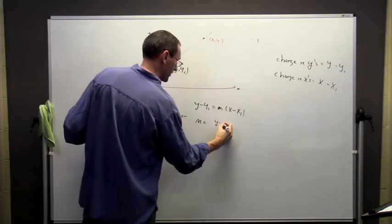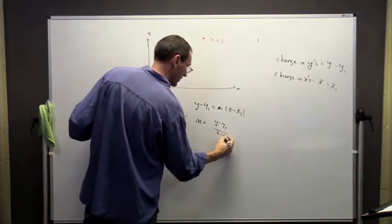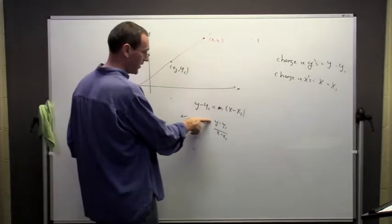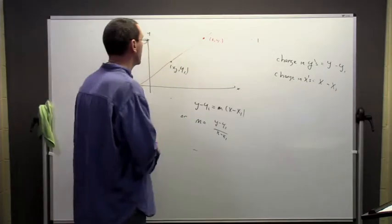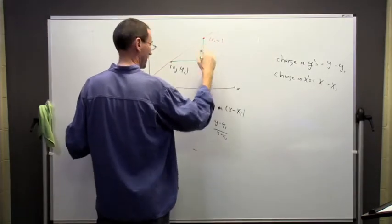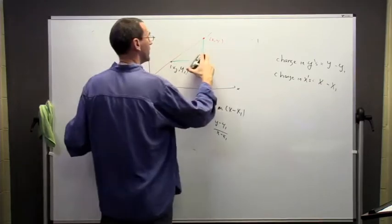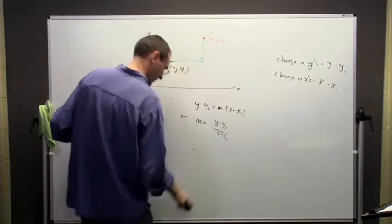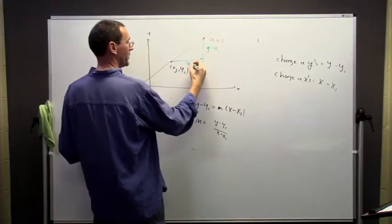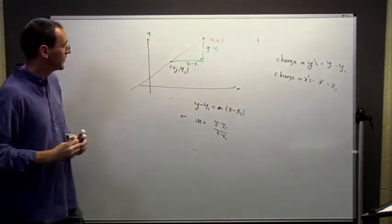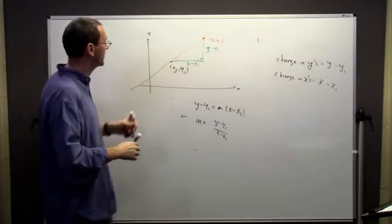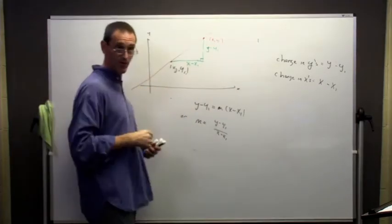So again, another way to look at this is that m, this constant of proportionality, is the change in y over the change in x. So graphically, change in y divided by the change in x is always going to be the same, no matter where I am on this. And what happens is if we graph this, we're going to get a straight line.